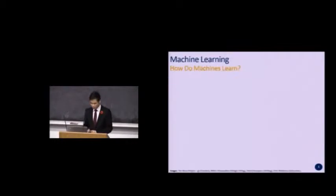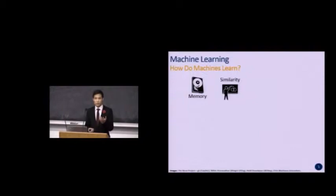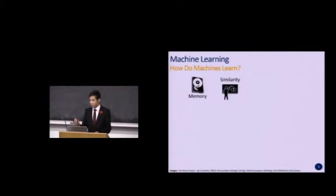There are four major paradigms in machine learning. First is memory — the ability to store and access information it has been taught. Second is learning by similarity — if you show a computer a picture of a car and then a slightly different car, can it still conclude the second picture is also a car? Third is learning by example — if you tell the machine a car can move and transport people, and then show it an airplane, can it generalize that both are vehicles?